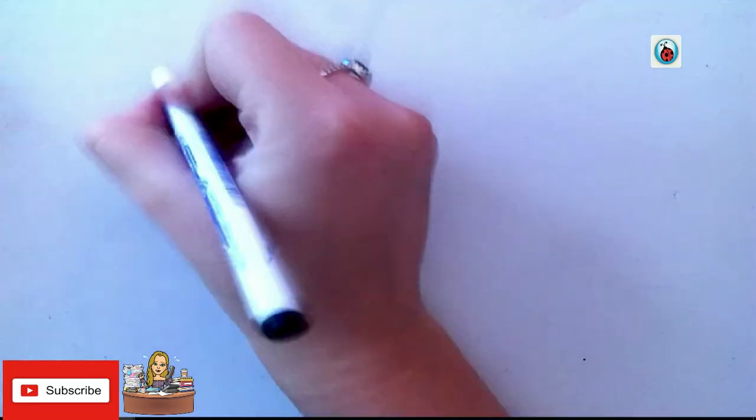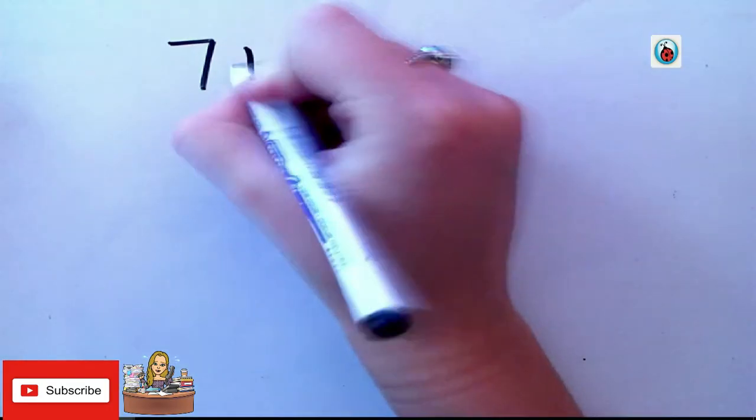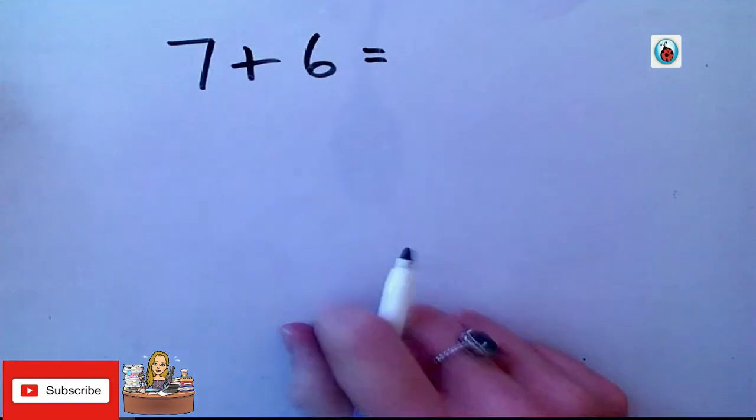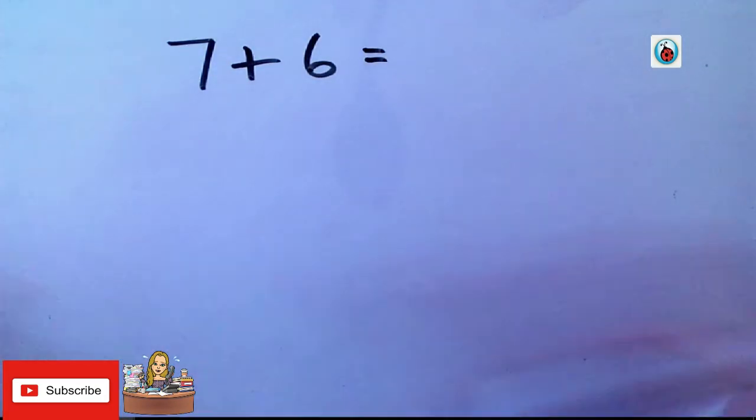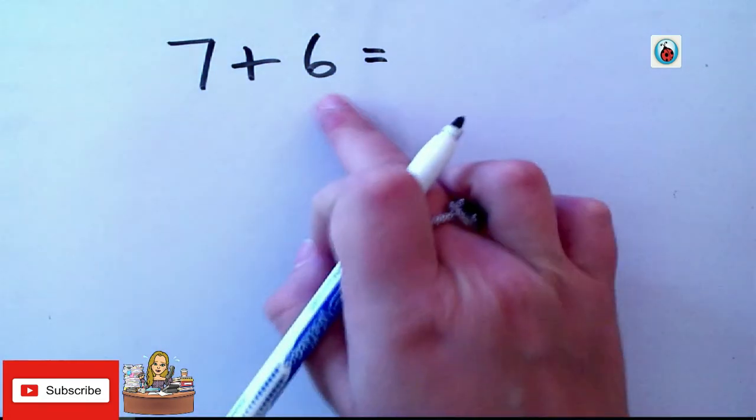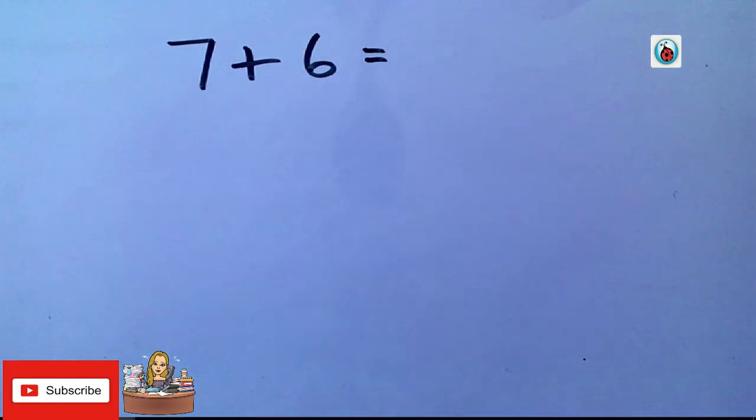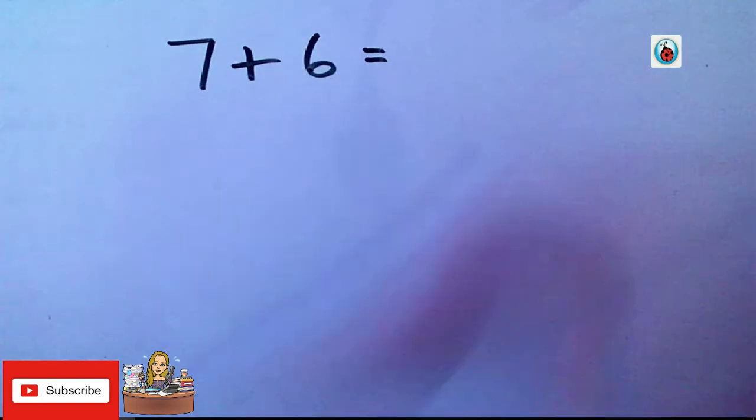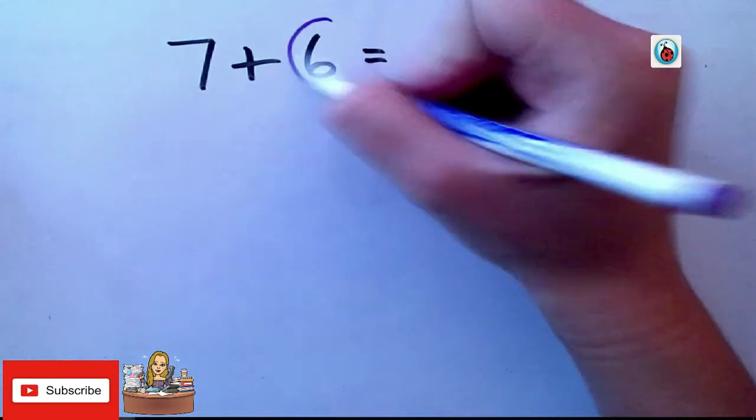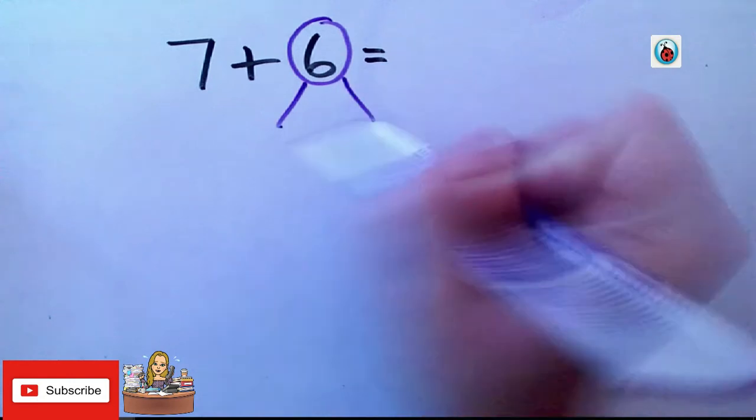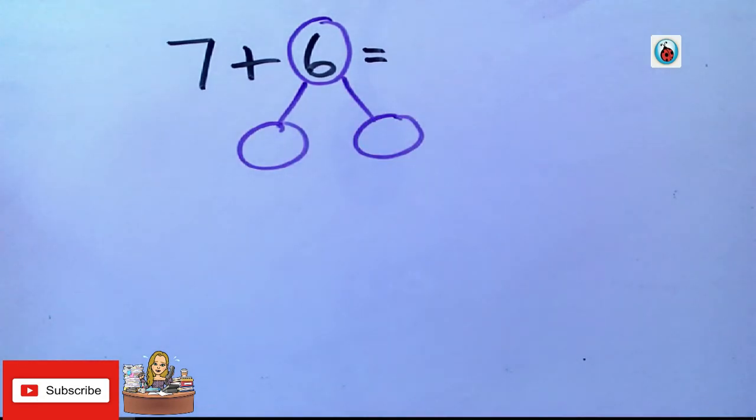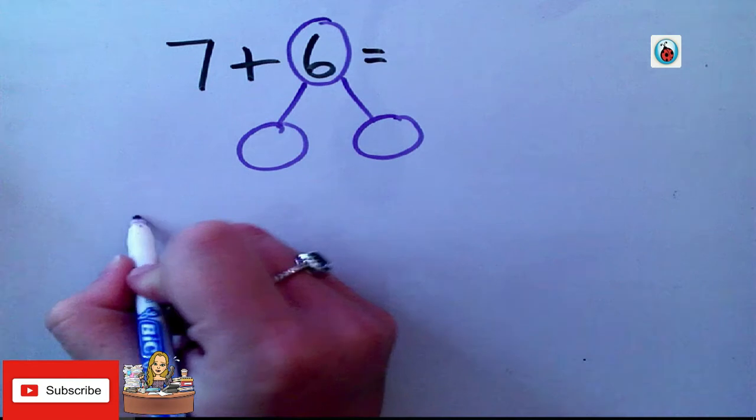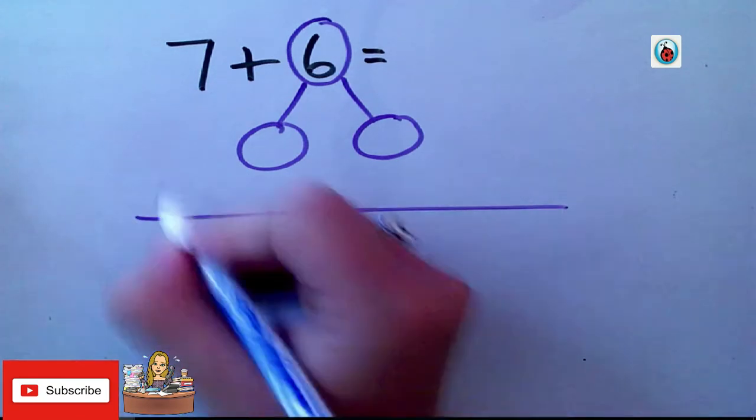Let's do one more. So, hopefully, you're getting the hang of this now. 7 add 6 equals something. So, again, pause the video. Have a go. Draw out your number line. Think about what do you start on and what are you going to partition this 6 into? So, I'm going to partition this 6 into two different numbers. First job. Draw out my number line. I start on 7.